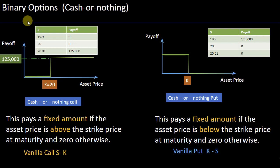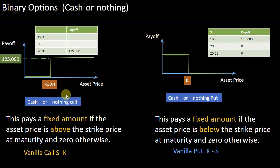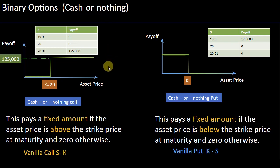When we talk about binary options, especially cash-or-nothing binary options, the way it works is: if there is a payoff, it's always a fixed amount. So in a cash-or-nothing call option or a cash-or-nothing put option, the payoff is always a fixed amount or zero otherwise.